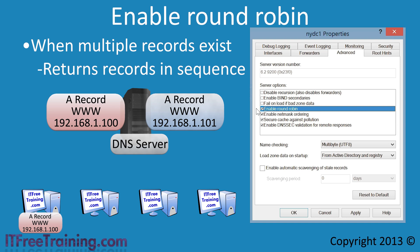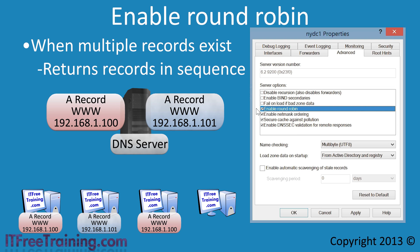When the DNS server receives the request from the second computer, it will give the second computer the second DNS record. When the third computer asks, the DNS server has no more records for www so it will go back to the first DNS record, and the fourth computer will receive the second DNS record. Half the computers obtain one DNS record and half the other. Round robin allows very simple load balancing — simple because it only balances based on request count, not server load. If you disable round robin, the DNS server will always return the first DNS record it finds in the zone file.